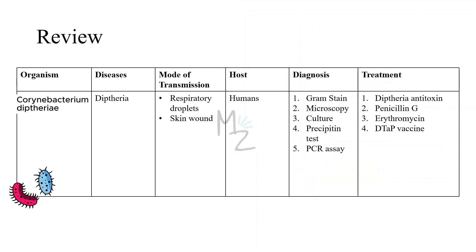Review. The organism discussed today is Corynebacterium diphtheriae, responsible for causing diphtheria. It is transmitted via respiratory droplets and skin wounds at pre-existing skin lesions. The host is humans. It is diagnosed by gram staining, microscopy, culture, precipitin test, PCR, and the metachromatic stain. It is treated with diphtheria antitoxin, penicillin G, erythromycin, and the DTaP vaccine. That's it for today's video.